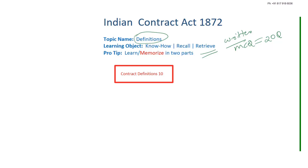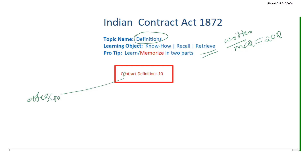Let's start with the definitions. First, in the Contract Act — we start with Contract. The first term is Offer, also known as Proposal.